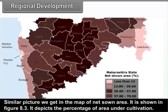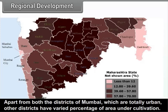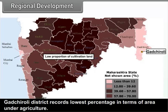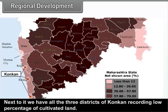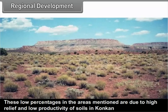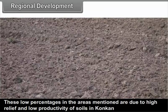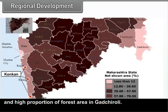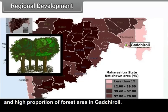A similar picture is shown in the map of net sown area in figure 8.3. It depicts the percentage of area under cultivation. Apart from both the districts of Mumbai, which are totally urban, other districts have varied percentage of area under cultivation. Gadchiroli district records the lowest percentage in terms of area under agriculture. Next to it, all three districts of Konkan record low percentage of cultivated land, due to high relief, low productivity of soils, and high proportion of forest area in Gadchiroli.